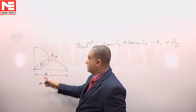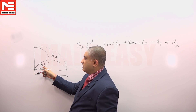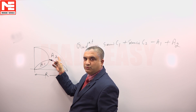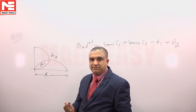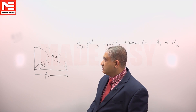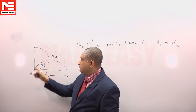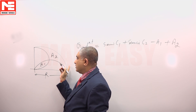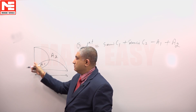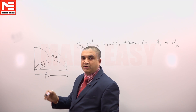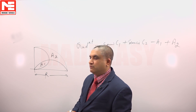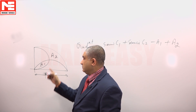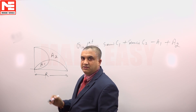We want to evaluate the ratio of a1 to a2. Let me explain what the given figure is all about. We have a quadrant of a circle — quadrant meaning one fourth of a circle.